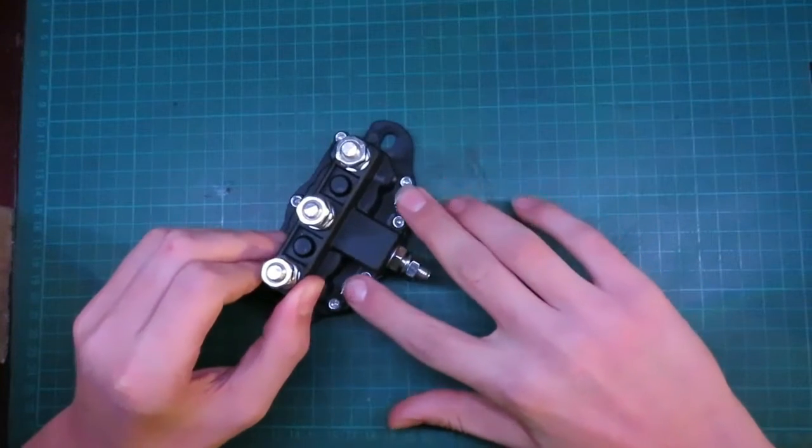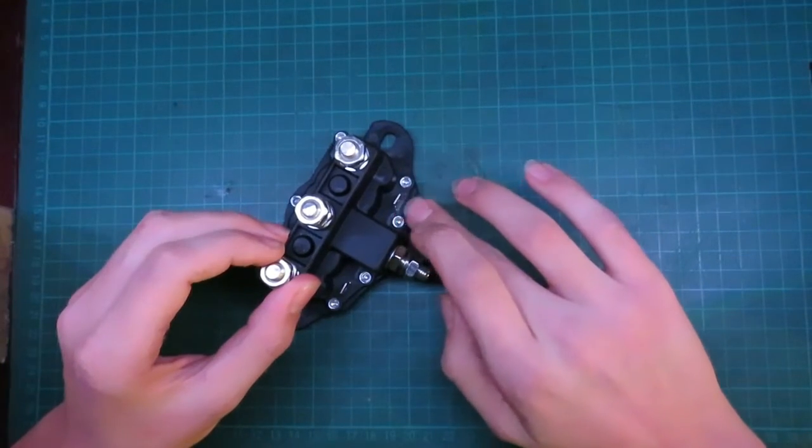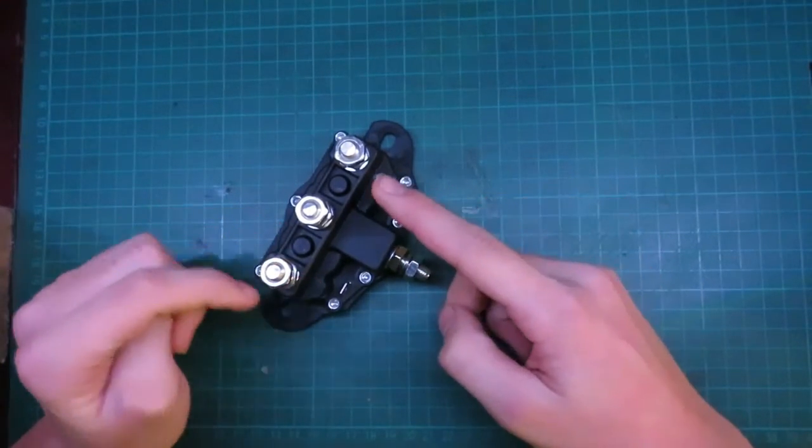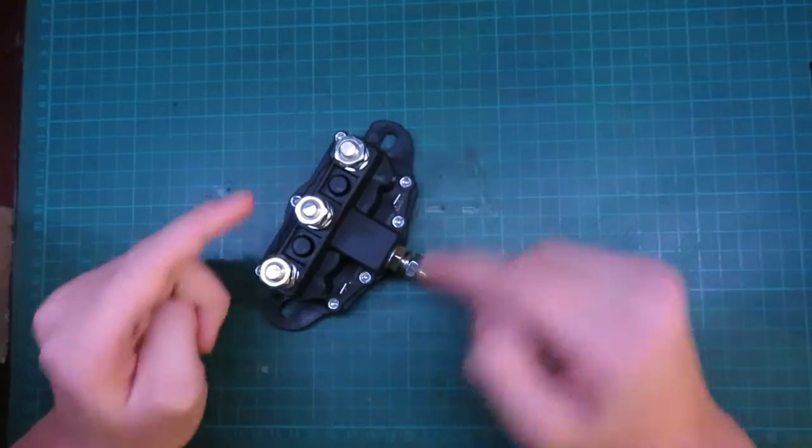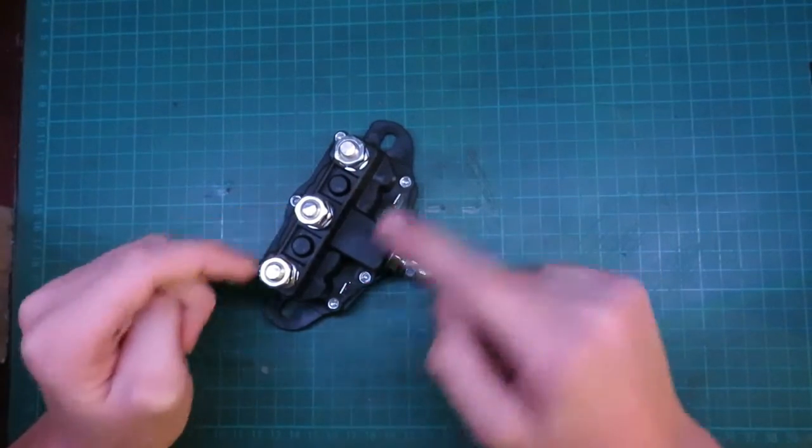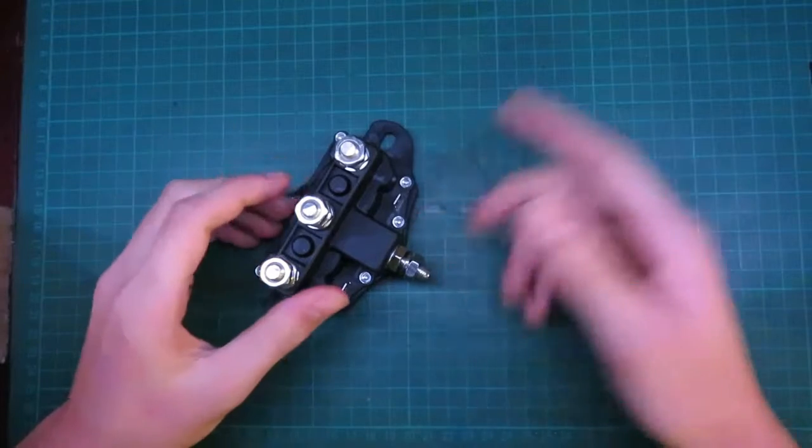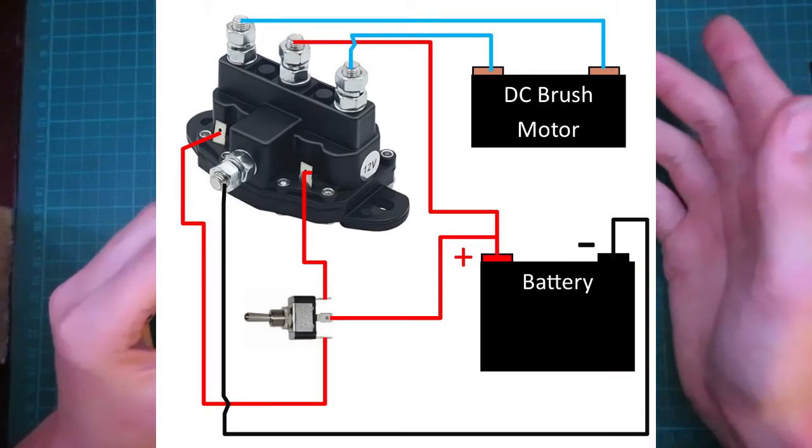And these two terminals right here, if the positive signal is applied to this one, then the motor will go one way. If the positive signal is applied to this one, the motor will go the other way. A wiring diagram will be shown on the screen, how to wire this up.